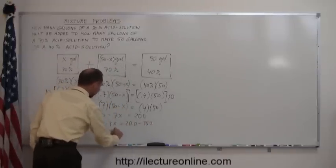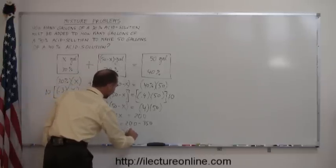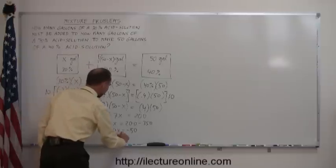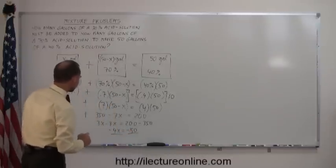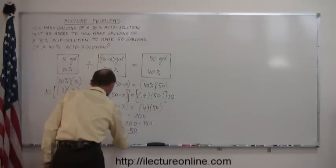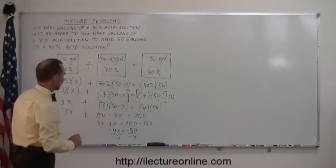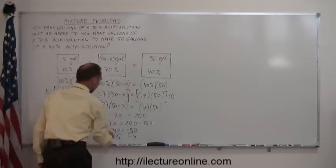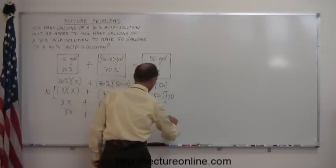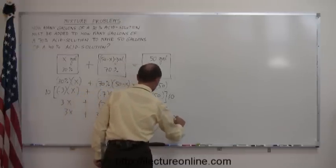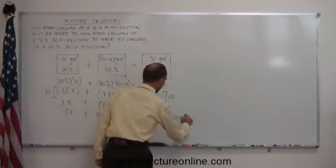3 minus 7x is minus 4x. 200 minus 350 is minus 150. Divide both sides by minus 4. Minus 4 cancels. 150 divided by negative 4. That gives me x is equal to. That goes in there 37 and a half times.